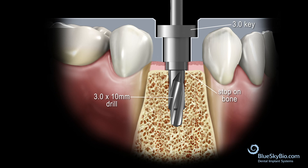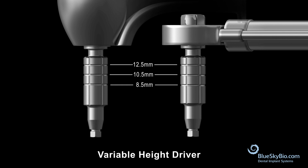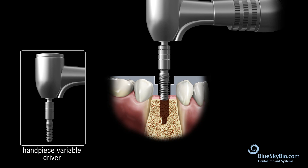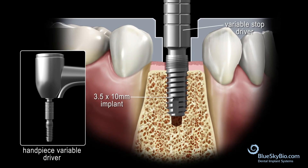You do not need to change the key to deepen the 3 millimeter osteotomy. The variable height driver will be used to place the implant. Attach the 3.5 by 10 millimeter implant to the handpiece variable driver. No key is needed to place this implant — the guided driver is sized to fit the 5.1 millimeter tube inside the guide. If the implant seats to the first mark when handpiece driven, then stop.